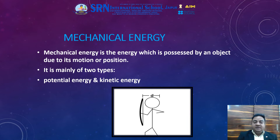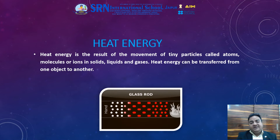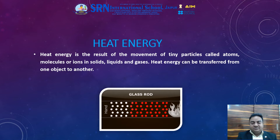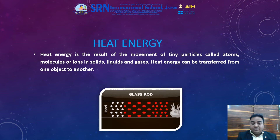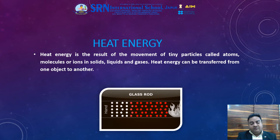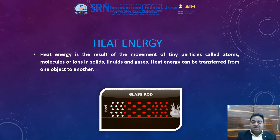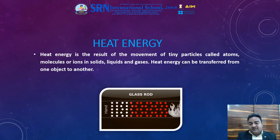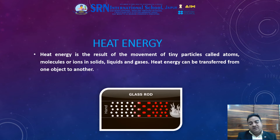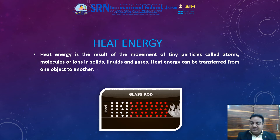Now let us see the different forms of heat energy. Heat energy is the result of movement of tiny particles called atoms, molecules or ions in solids, liquids and gases. Heat energy can be transferred from one object to another. We can perform an experiment: take an iron rod and attach some small pins with the help of wax. If we heat one end of the iron rod, we will see that slowly and gradually all the pins fall down, because heat is being transferred from one end of the rod to the other end.